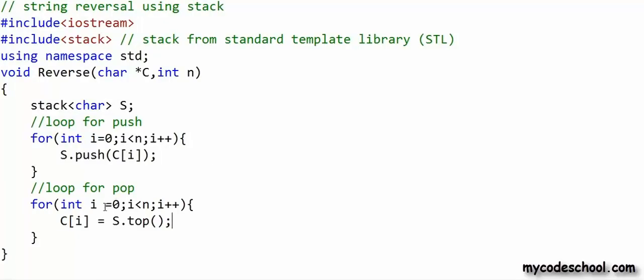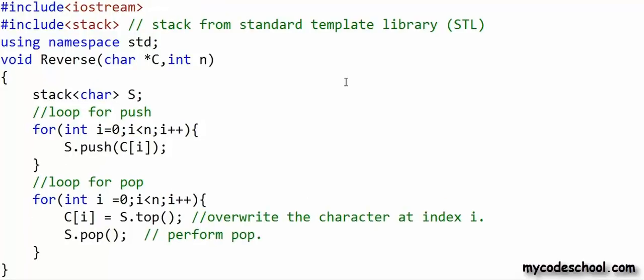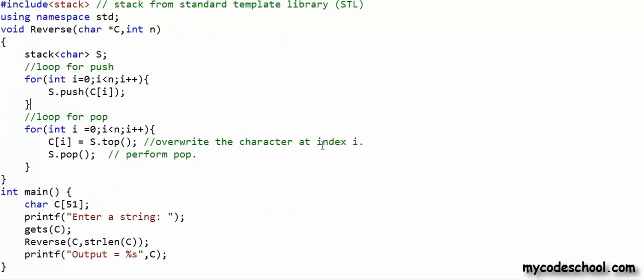Once push is done, I will do another loop for pop. I will run a loop with this variable i starting at 0 going till n minus 1. I will first set C[i] as top of stack, then perform a pop operation. If you want to know more about functions available with stack in STL, check the description for resources. This is all I need in my reverse function.